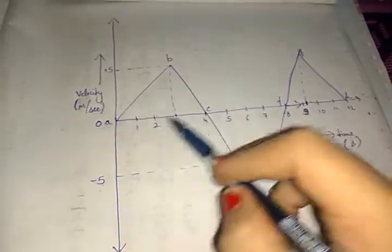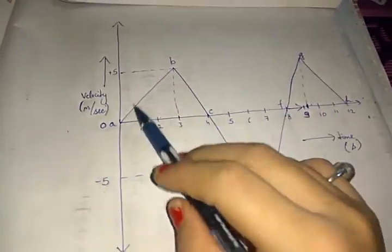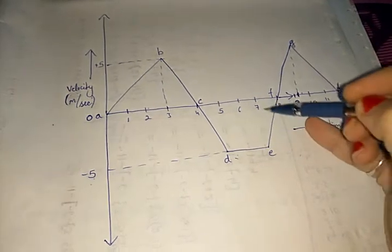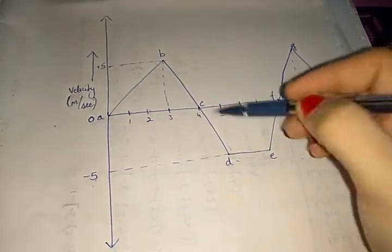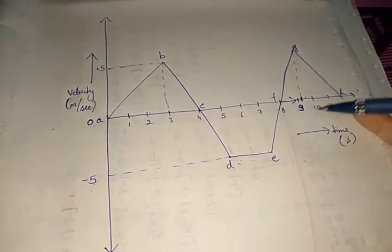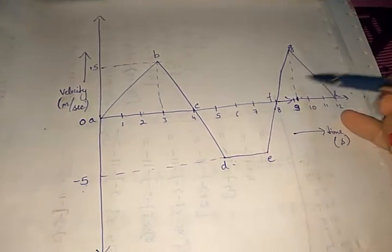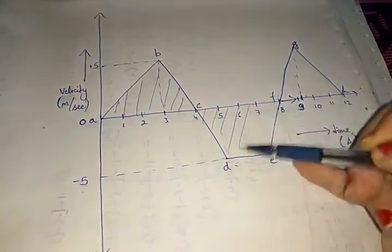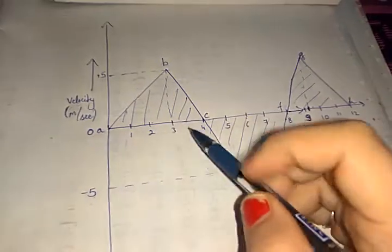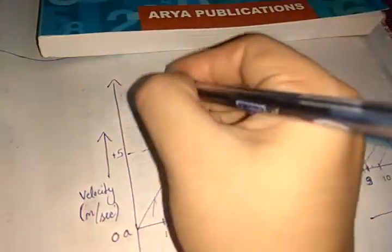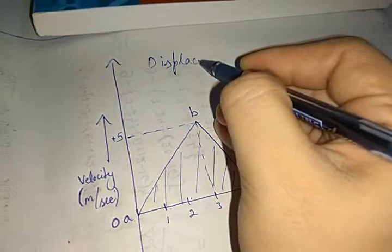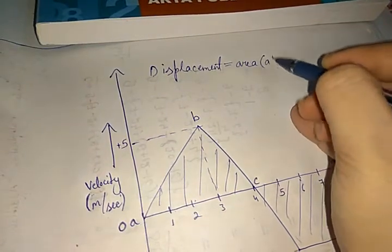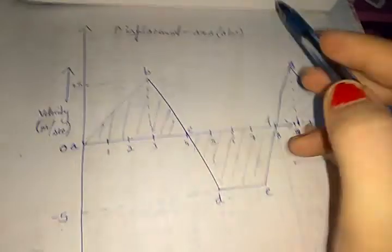These inclined lines together make a triangle — the first triangle represents the first phase of motion. After that, toward the negative direction, there is a trapezium representing the next phase, and then another triangle. So we will find the area of this triangle, this trapezium, and this triangle. The displacement equals the area of triangle ABC.